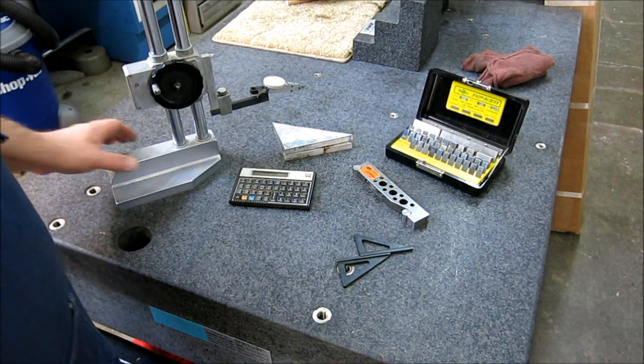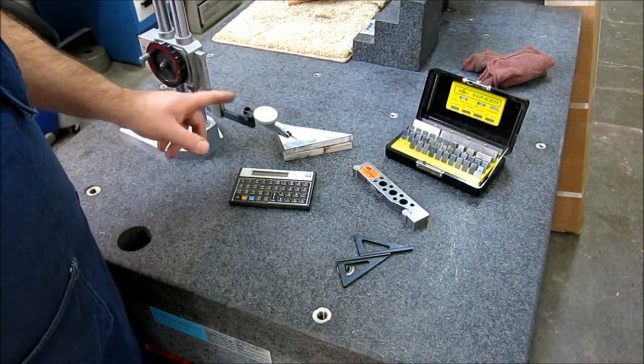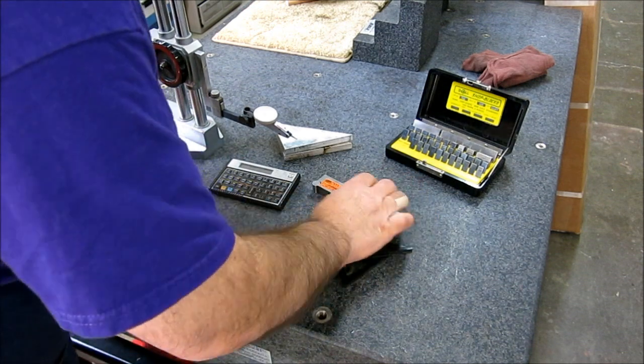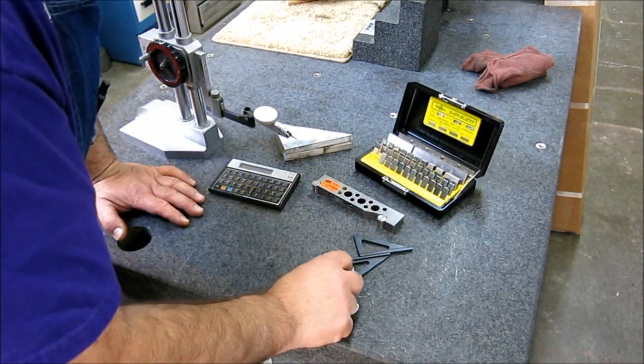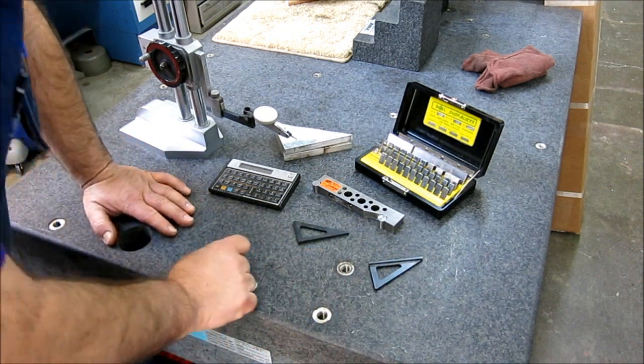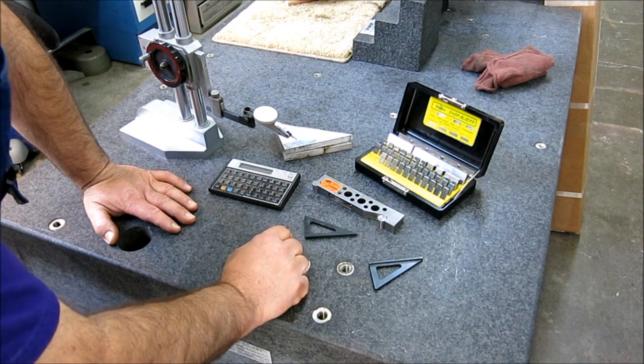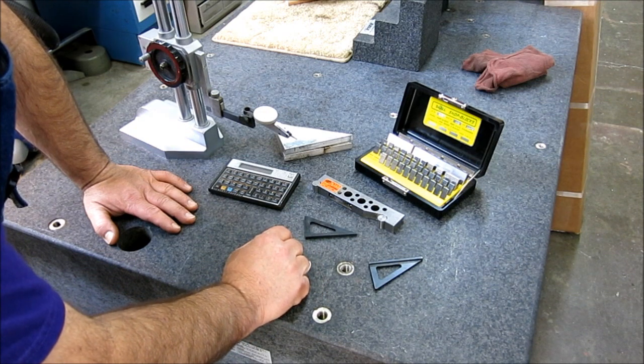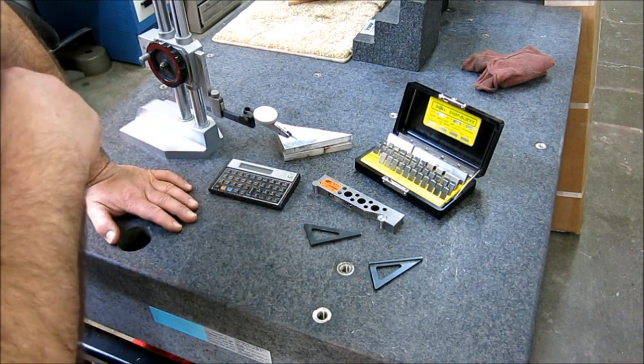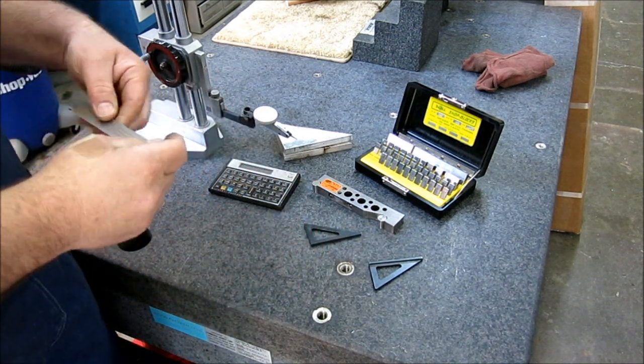Okay, so we got everything we need here. So we got our indicator on our height gauge, got our sine bar, got our gauge blocks. So I thought we'd just go through it. I happen to know what the stack up is for 30 degrees, but we'll just kind of go through that. So this is a five inch sine bar here, okay?